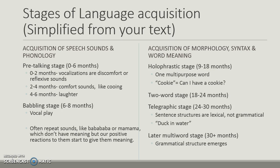This is simplified down from your text. From zero to six months, we have the pre-talking stage. Zero to two months is when we vocalize discomfort and reflexive sounds. Two to four months, we start expressing comfort sounds like cooing. And four to six months, we start having laughter. Then we go into the babbling stage.